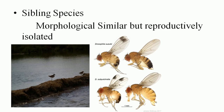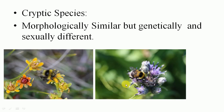The next type is sibling species. Sibling species are morphologically similar organisms but they are reproductively isolated. For example, Drosophila suzuki and Drosophila sublurosella — these two are both Drosophila, morphologically similar, but they are reproductively isolated. This type of species is known as sibling species. Then the next type is skeptic species, which are also morphologically similar but genetically and sexually different.